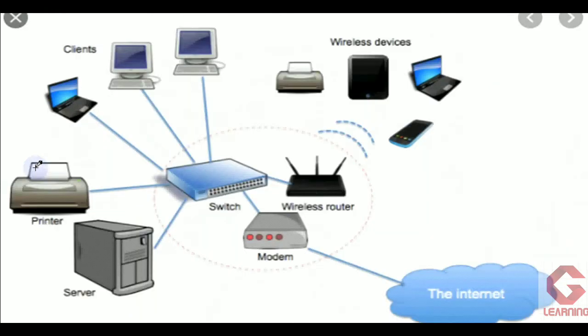Whatever data or software we want to share with all the computers in the network, we have to keep or install it in the server at the center. The second picture is an example of internet sharing. Here only one internet connection is used, and this connection is provided to the switch via modem, and from the switch it is provided to a wireless router. Because of the wireless router, three devices get their internet connection: one tablet, a laptop, and a mobile phone. And because of the switch, three more devices get internet connection on the left side.